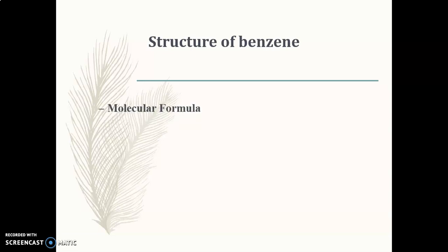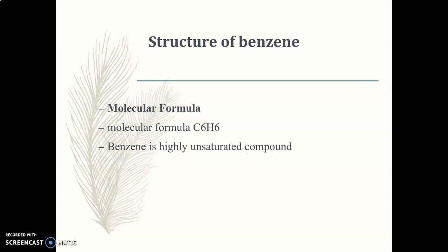How was the structure of benzene derived? The first step is determining the molecular formula. By using physical and chemical methods, we can derive the molecular formula of a given compound. Scientists determined that the molecular formula of benzene is C6H6. Today we easily know this, but at that time it was derived through these physical and chemical methods. From this molecular formula, it is clear that benzene is a highly unsaturated compound.